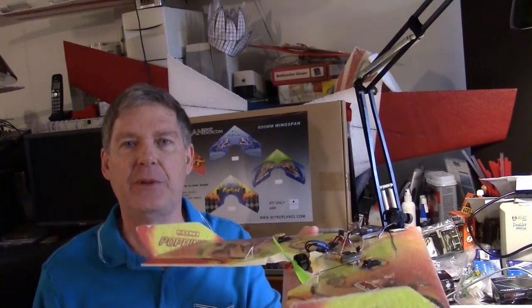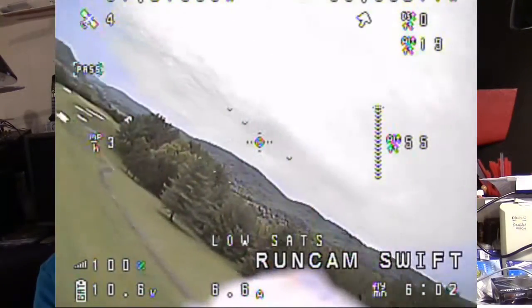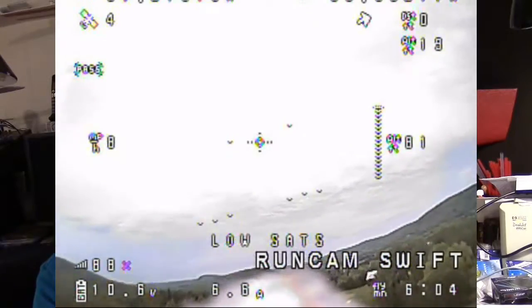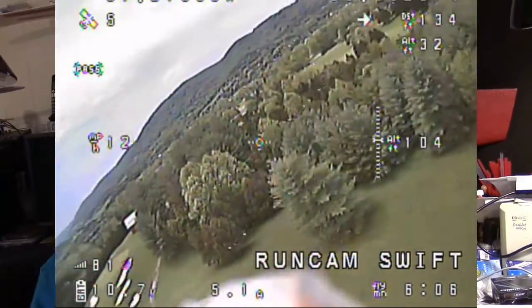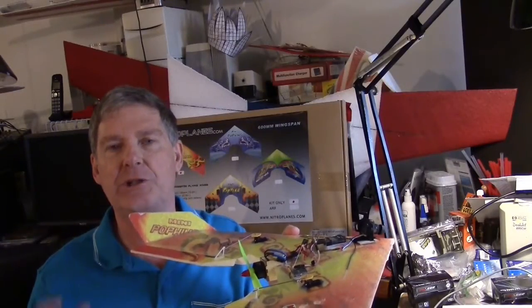But I wouldn't recommend flying it in stabilize mode the first time you try it. It's best to fly it in bypass, get everything trimmed out because even if you have the plane previously trimmed out without the flight controller, when you add the flight controller and the signals for the servos are running through that, for some reason it will act differently. You have to do some trimming in bypass mode and get it all set and then check it into stabilize mode.